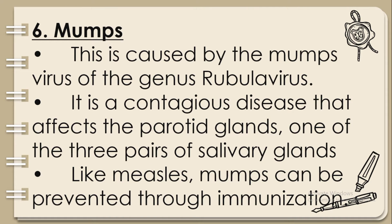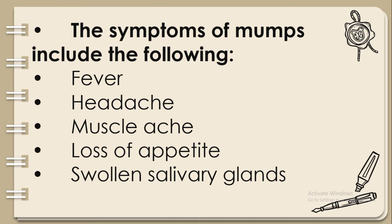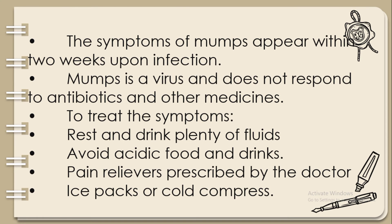Number six: Mumps. This is caused by the mumps virus of the genus Rubulavirus. It is a contagious disease that affects the parotid glands, one of the three pairs of salivary glands. Like measles, mumps can be prevented through immunization. Symptoms include fever, headache, muscle ache, loss of appetite, and swollen salivary glands.